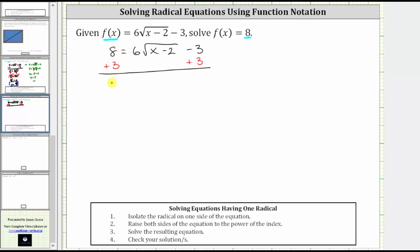Simplifying, 8 + 3 = 11. We have 11 equals, on the right side, -3 + 3 = 0. The right side is now just 6√(x - 2).